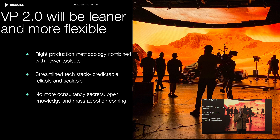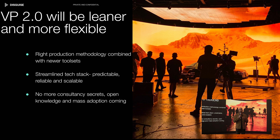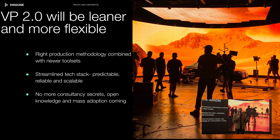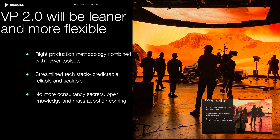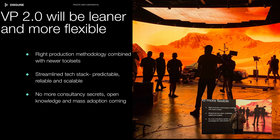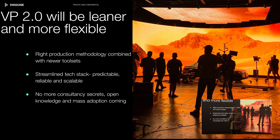In summary, VP 2.0 is all about flexibility. It's not setting a workflow in stone — it's about having options, creating things as needed rather than building very large things that may not be needed in post. Staying lean, allowing room for changes, iterations, and flexibility is what every production wants. And that is the end of my presentation. Thank you.